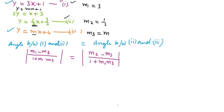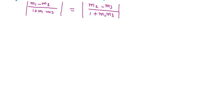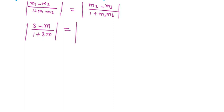Now we will put the values of m1, m2, and m3 here respectively. The value of m1 is 3 and the value of m3 is m, so the left side becomes (3 minus m) upon (1 plus 3m). For the right side, m2 is 1 by 2 and m3 is m, giving (1/2 minus m) upon (1 plus 1/2 times m).